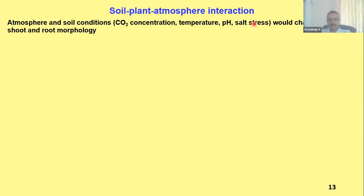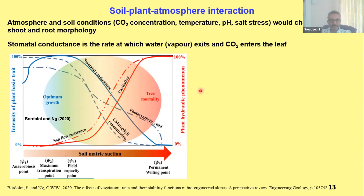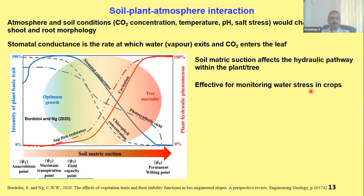To summarize: atmosphere and soil conditions — carbon dioxide concentration, temperature, pH, and soil stress — would change the shoot and root morphology. This is with respect to soil-plant-atmosphere interaction. Stomatal conductance, which botanists, agriculturists, and biotechnologists generally talk about, is also important while evolving engineering solutions — for example, in the case of green infrastructure. There is an example wherein stomatal conductance is related to soil matric suction, and it affects the hydraulic pathway within the plant or tree. This is effective for monitoring water stress in crops. The idea is to use this concept for optimizing irrigation efficiency by integrating both soil characteristics as well as plant physiology.